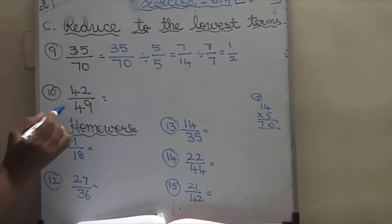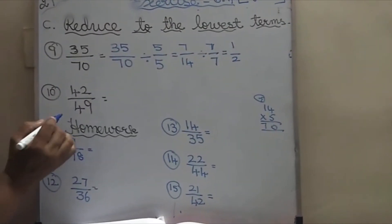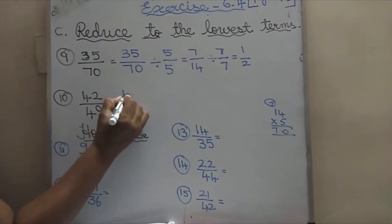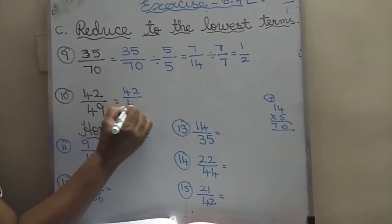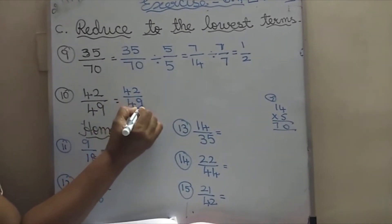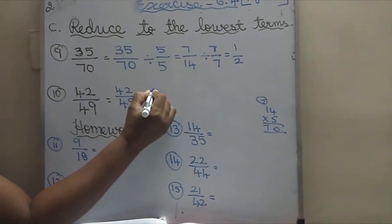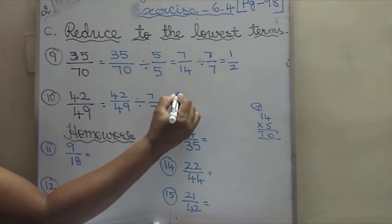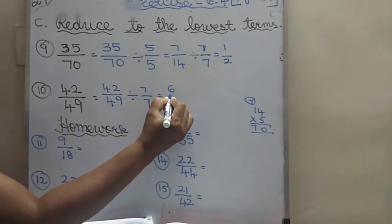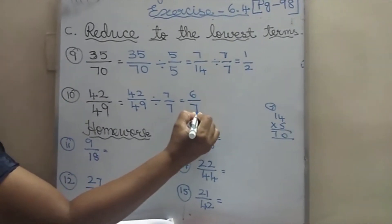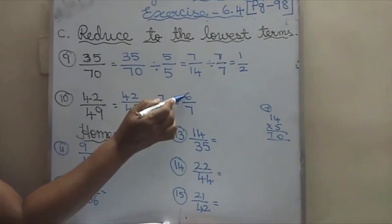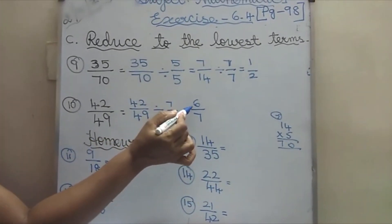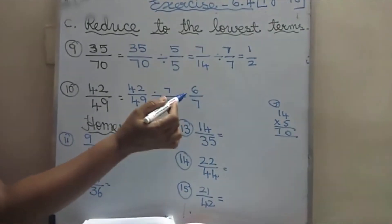We will come to 42 by 49 — it goes in 7 table: 42 by 49 divided by 7. 7 6s are 42 and 7 7s are 49. These 2 you can't divide further — so this is the lowest term.